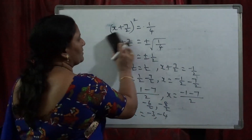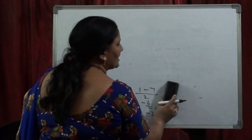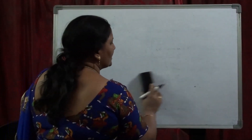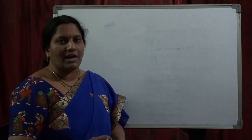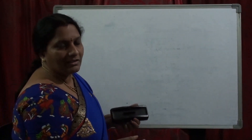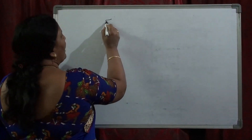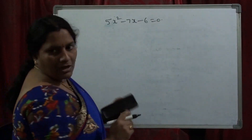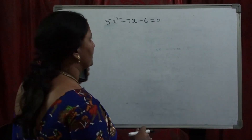This is called finding the roots of the given quadratic equation by using the complete square method. This is the procedure when the x² coefficient equals 1. If the x² coefficient is not equal to 1, let us see how to find the roots in this example: 5x² − 7x − 6 = 0.